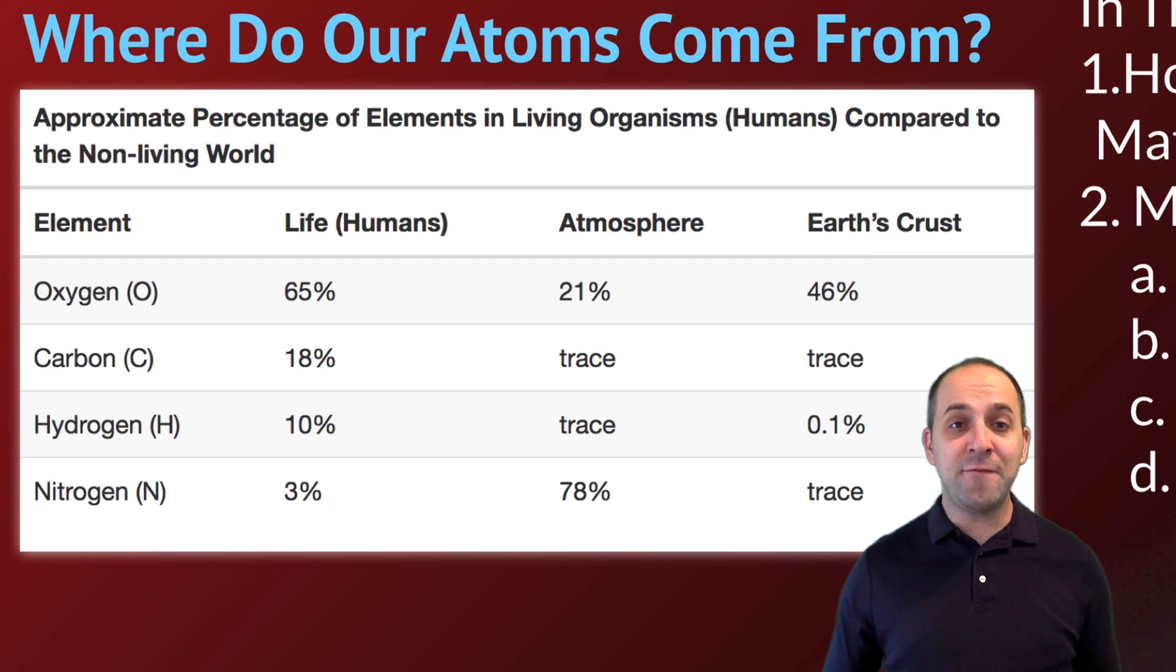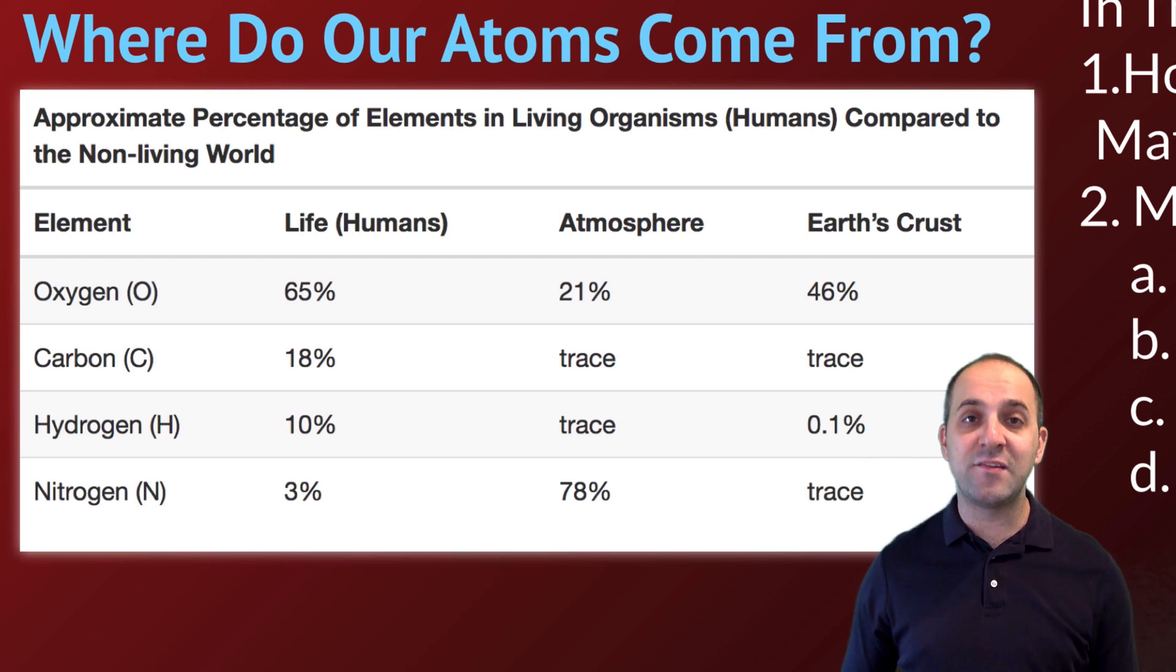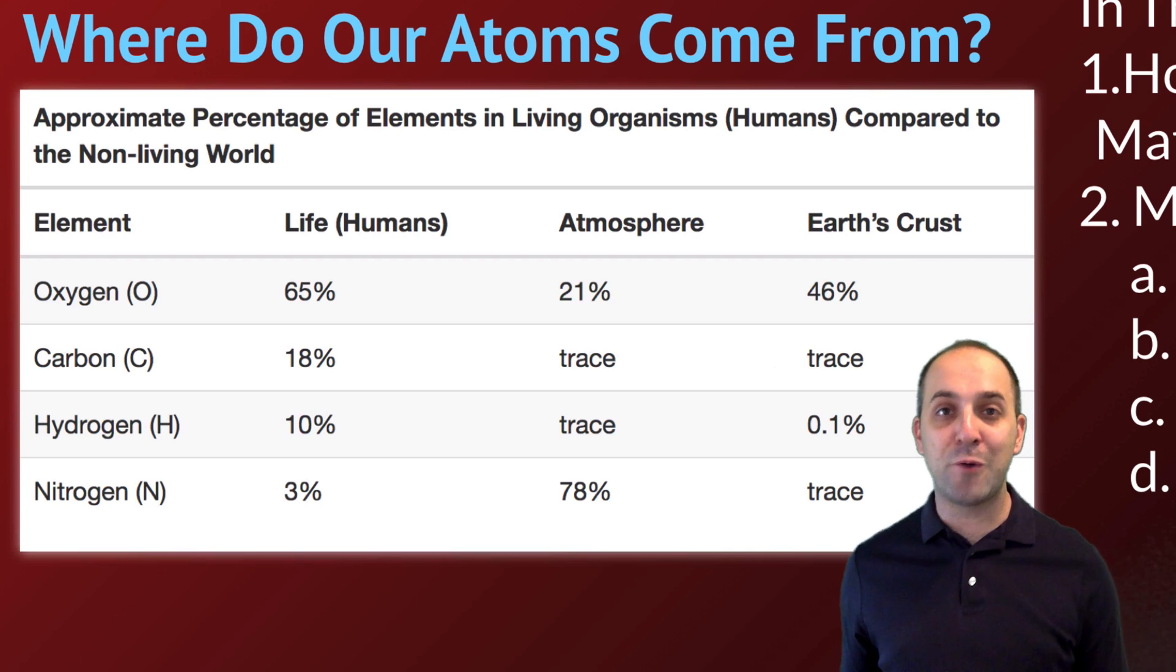This is a chart just for your reference so that you can compare the percentage of elements in humans compared to other parts of the Earth, like the atmosphere and the Earth's crust. And you can see that in life, those percentages are different. And so that would suggest that living systems are doing things.